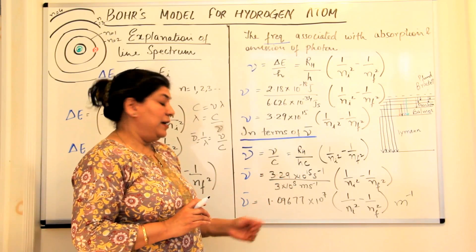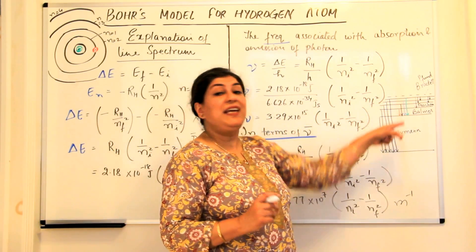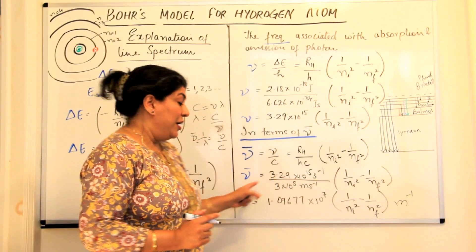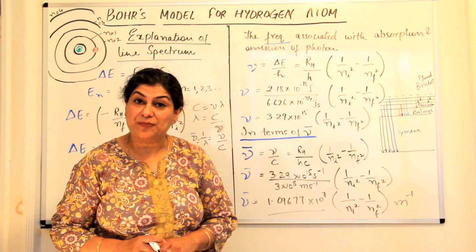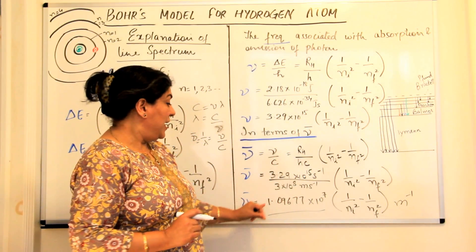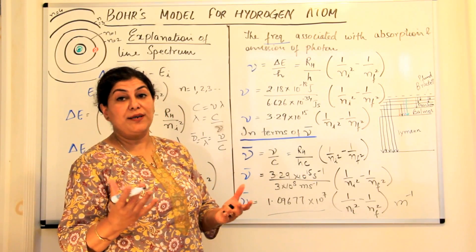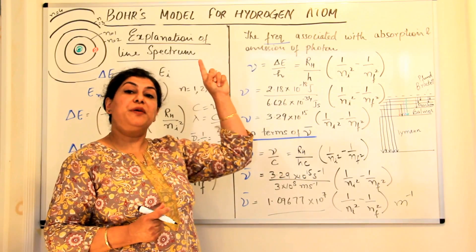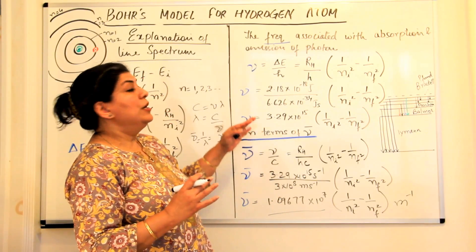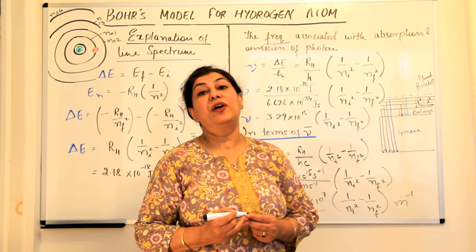If you remember, when Balmer explained his series and gave a mathematical calculation, he derived this same equation, where this value is the Rydberg's constant for hydrogen. Bohr also arrived at the same value after all these calculations — the same value that Balmer had given when explaining the Balmer series. This is how Bohr numerically explained the formation of spectral lines for hydrogen.